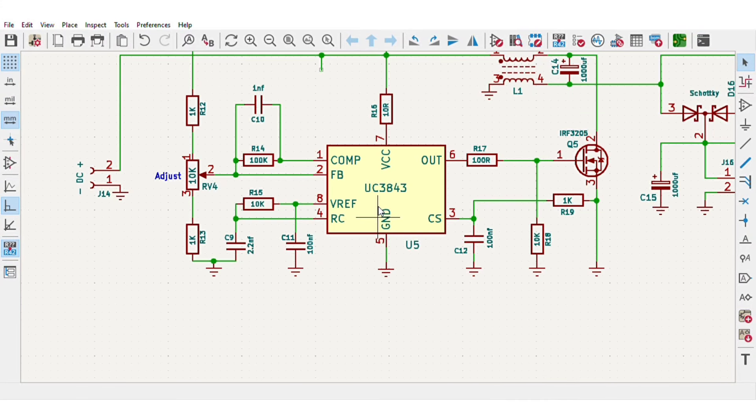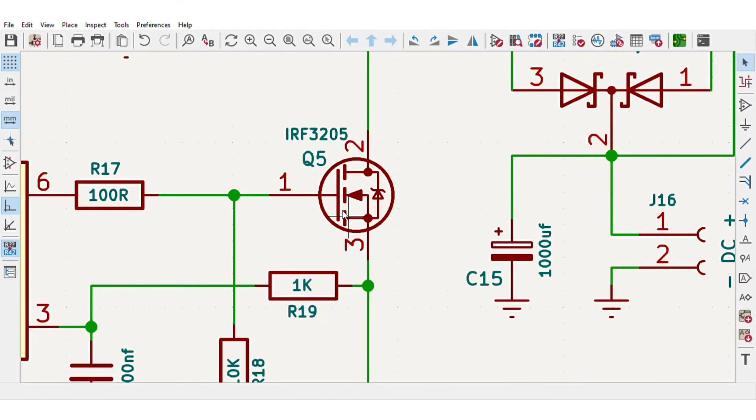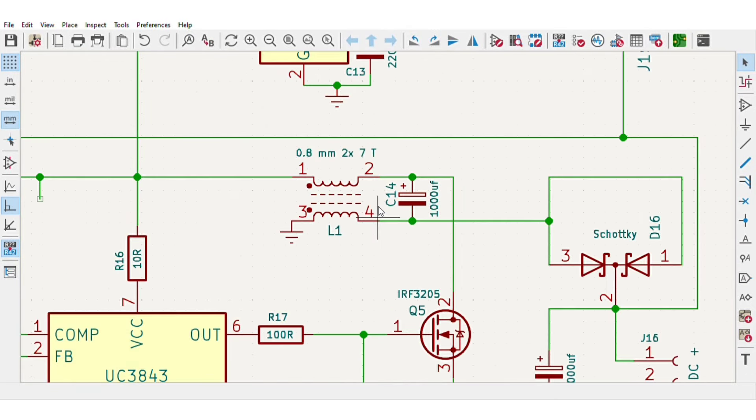I designed the simple circuit diagram, which is actually based on the UC3843 PWM IC. The output controls the switching of this N-channel MOSFET, it can be Z443205, and it drives this choke inductor for boosting or regulating the voltage.